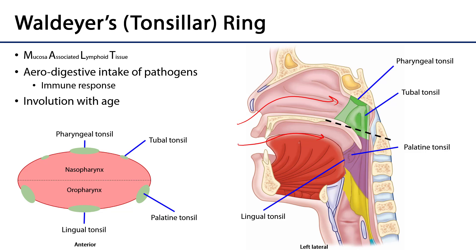These tonsils are sites of immune response, so pathogens are brought into contact with antigen-presenting cells such as macrophages and dendritic cells, as well as lymphocytes — T cells and B cells — so as to raise an immune response.